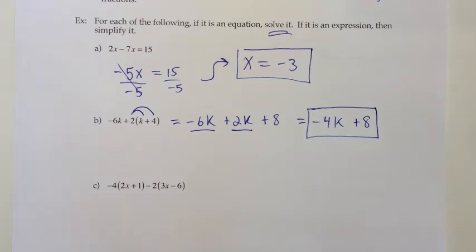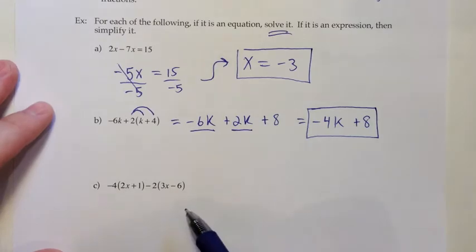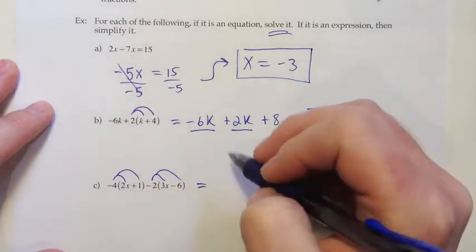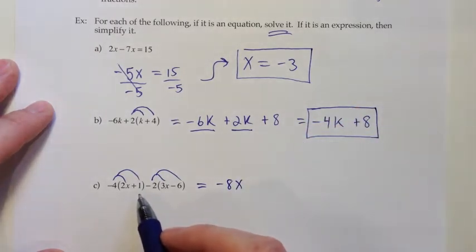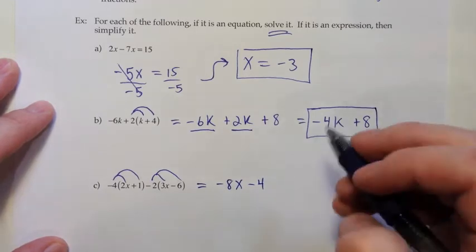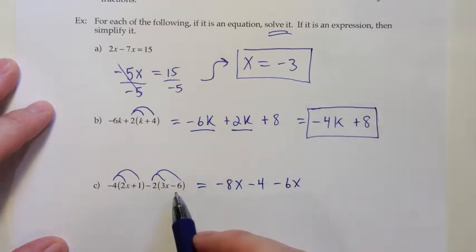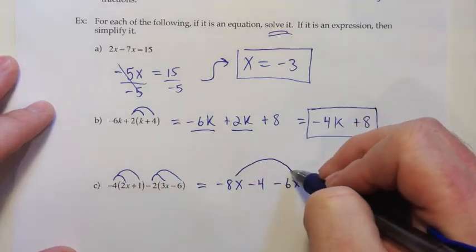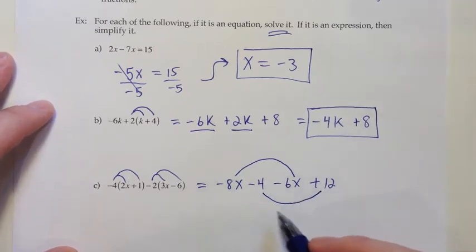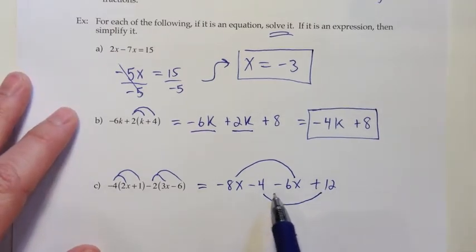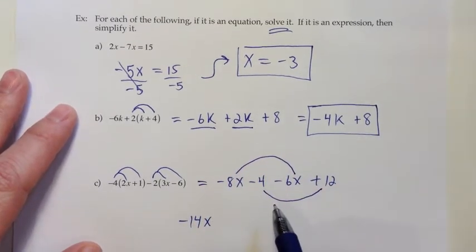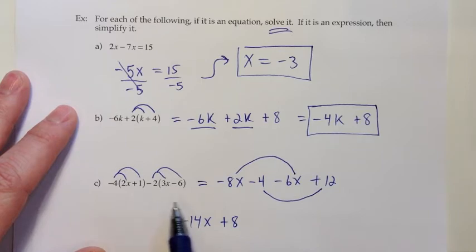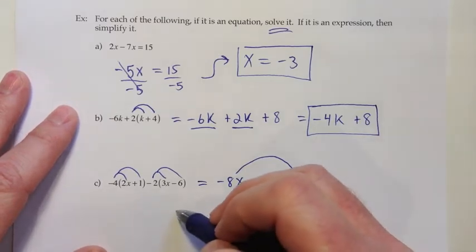For Part C: does it have an equal sign? No, so it must be an expression. For an expression, we simplify. With parentheses, we remove them by distributing. Negative 4 times 2x is negative 8x. Negative 4 times positive 1 is negative 4. Negative 2 times 3x is negative 6x. Negative 2 times positive 6 is plus 12 — careful with signs, negative times negative gives a positive. Then we have two x-terms and two constant terms. Negative 8 plus negative 6 is negative 14x. Negative 4 plus 12 is plus 8. Since we started with an expression, there's no solution — we've simplified to negative 14x plus 8.